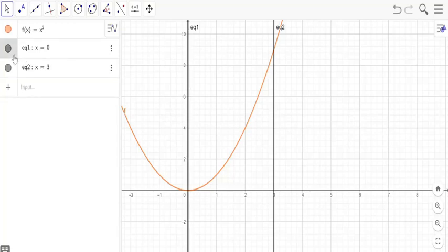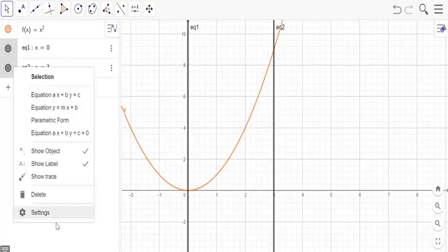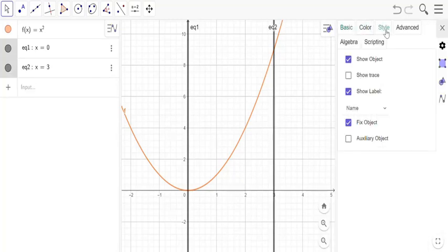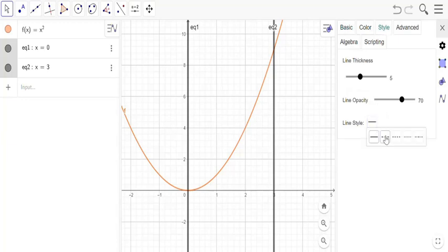And I'll change the style of these two lines. So I'll be using dashed lines, and let's say I change the thickness.